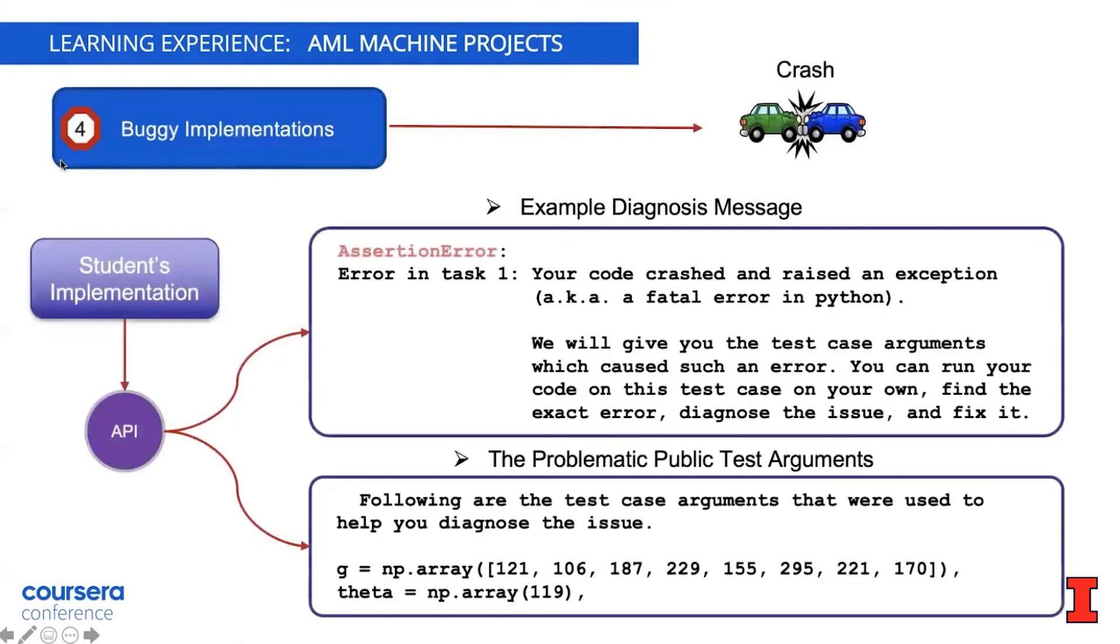It's also common for the students to produce a buggy implementation where their code could be crashing on a certain set of input arguments. So as you can see, here's an example diagnosis message. And we also output the problematic test case arguments that cause their code to crash in the first place, again, to help them identify the problem.